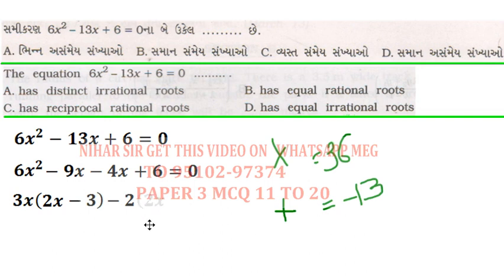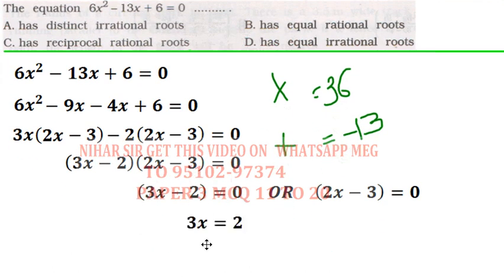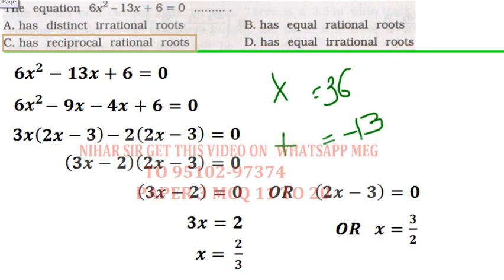Take 2 common from both and copy the bracket without putting any effort. 3x minus 2 equals 0 or 2x minus 3 equals 0. Take both equal to zero. Now this is 3x equals 2, 2x equals 3. So both answers are reciprocals of each other: 2/3 and 3/2. They have reciprocal rational roots.